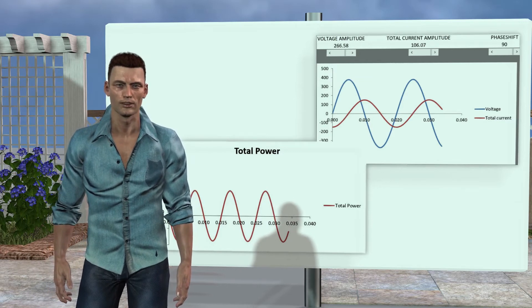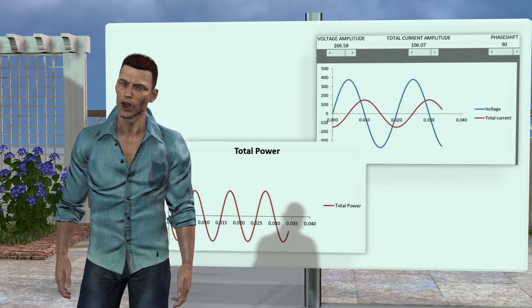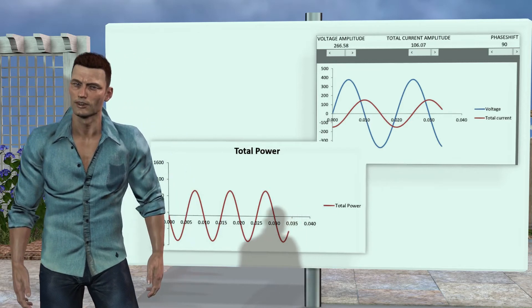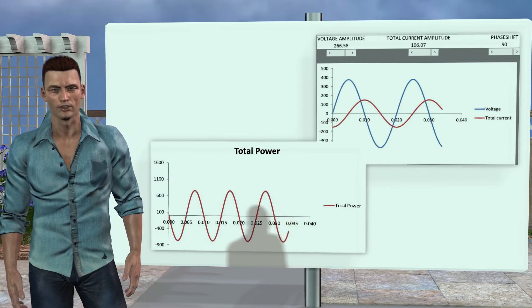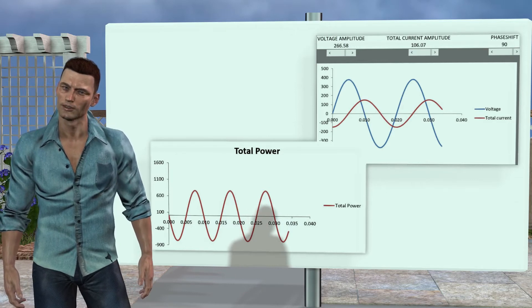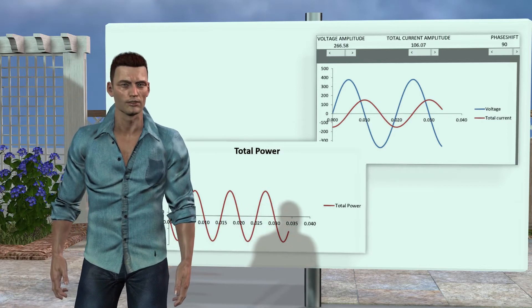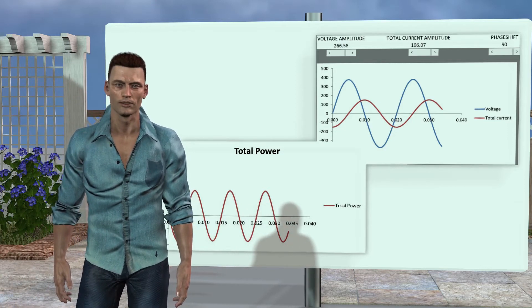As we can see in the lower left graph, the instantaneous power oscillates above and below the horizontal axis, that is, when it is positive, the coil takes energy from the source and when it is negative it transfers energy to the source, but its average value in time is zero, that is, an ideal coil, on average, does not consume energy.